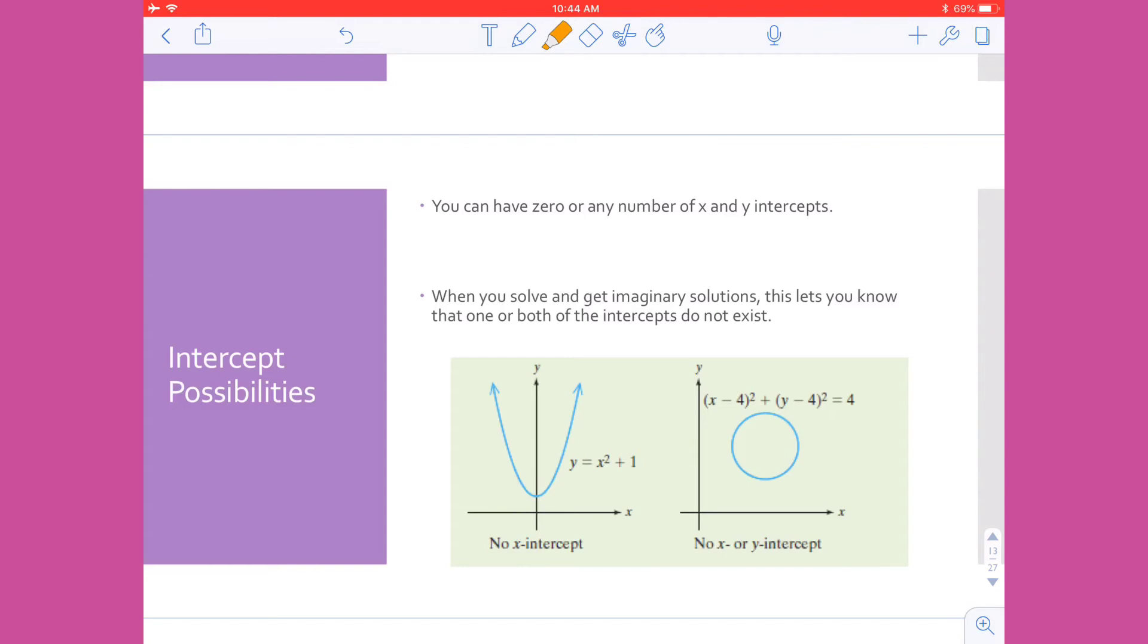So you see that I have a graph here, and this first one here, y equals x squared plus one, does not have an x-intercept. So that means when I would be solving for the x-intercept, I would get an imaginary complex solution. Same thing with the second graph. This is the graph of a circle. It does not cross either of my axes, and therefore I do not have x or y-intercepts. So I would run into an error trying to solve this and get complex solutions.